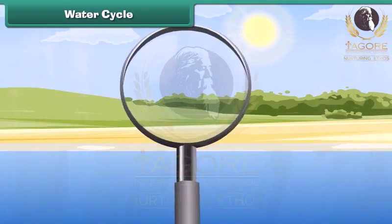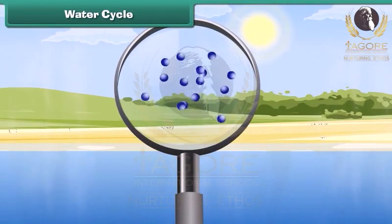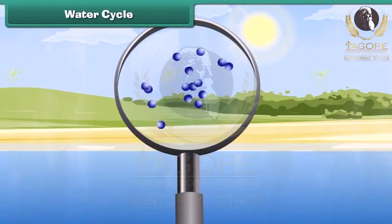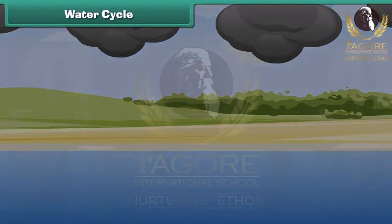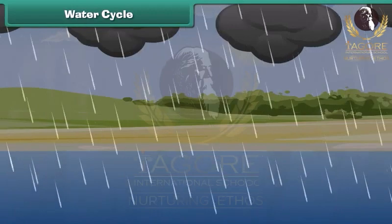High up in the atmosphere, water vapors cool down and form clouds. This is called condensation. When the water molecules in clouds begin to collect, they form bigger droplets and fall down as rain, snow or hail depending upon the temperature. This is called precipitation.